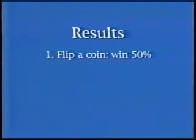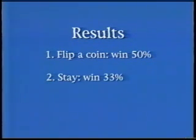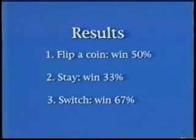What did you think would happen? How many of you were surprised at the results? Many people are surprised. If you repeat the experiment 20 times and you are not dealing with bent cards or psychics, your results will look something like this. If you flipped a coin, you won about 50% of the time — say 9 to 11 times out of 20. If you stayed, you won about a third of the time, only 6 to 8 times. And if you switched, you won about two thirds of the time, say 12 to 14 times.